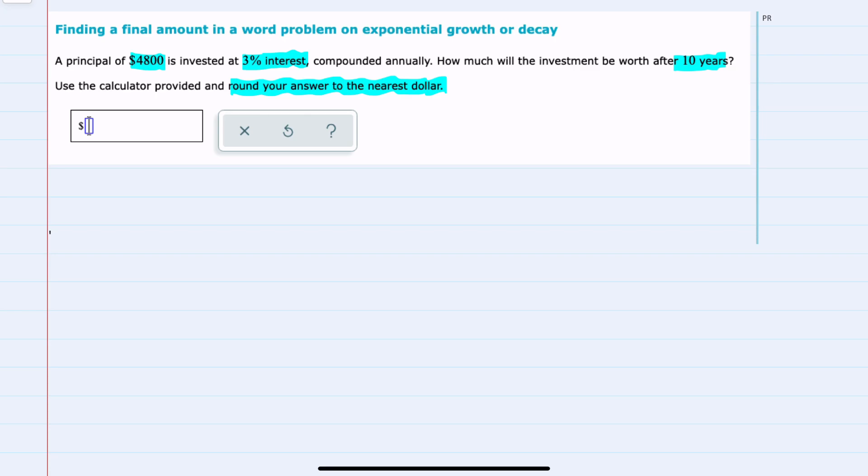In previous examples, we've shown that the interest compounding could be calculated each year by starting with the amount of the investment and then adding the interest. Here, that 3% annual interest would be calculated by taking the principal $4,800 and multiplying by the decimal equivalence of 3%.